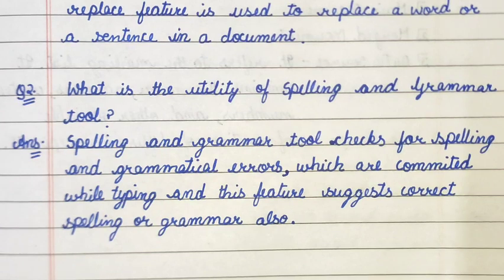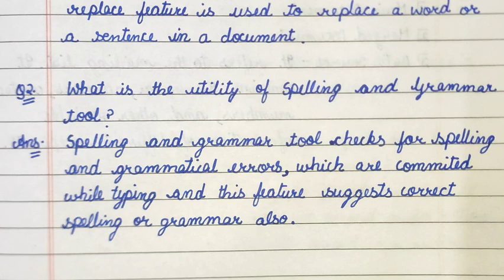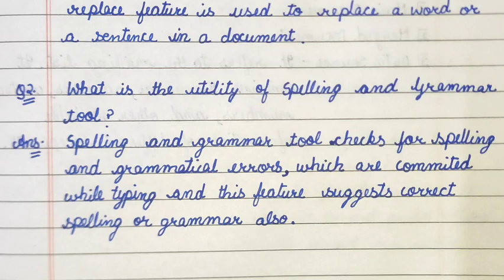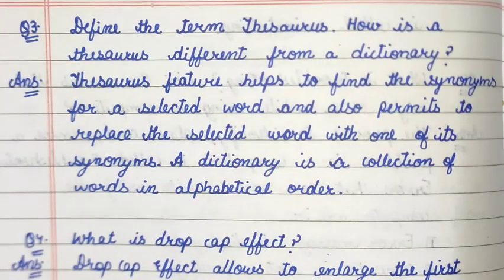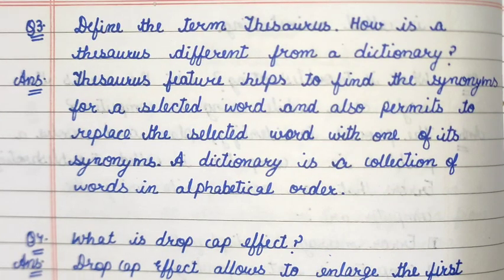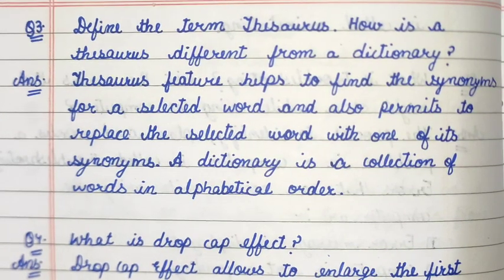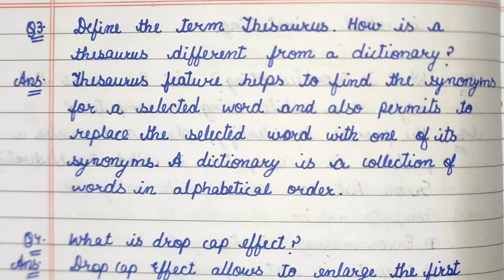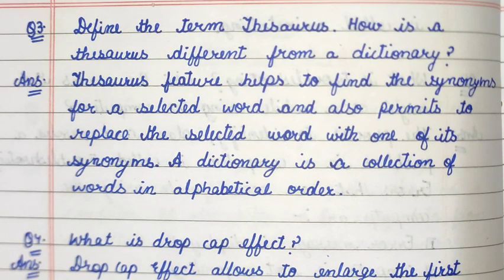Question number two: what is the utility of the spelling and grammar tool? Answer: the spelling and grammar tool checks for spelling and grammatical errors which are committed while typing, and this feature suggests correct spelling or grammar also. Question number three: define the term Thesaurus. How is Thesaurus different from a dictionary? Answer: the Thesaurus feature helps to find the synonyms for a selected word and also permits to replace the selected word with one of its synonyms.